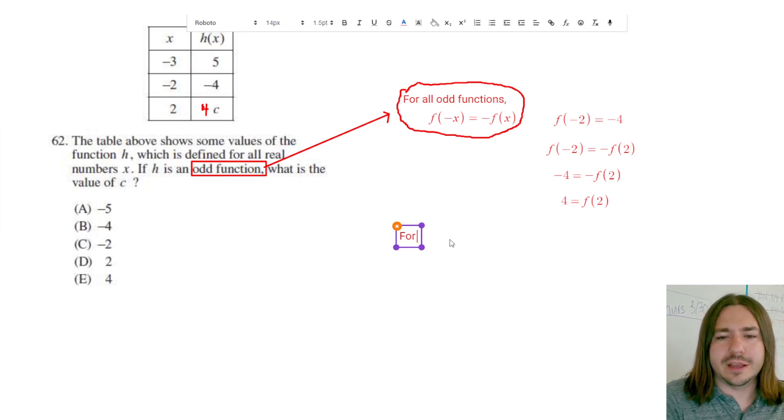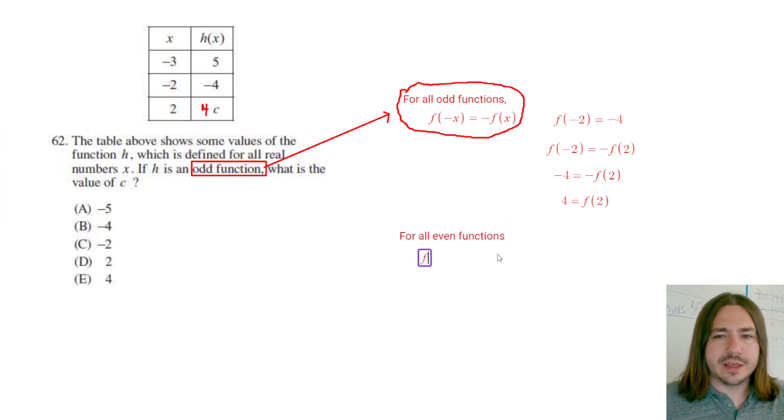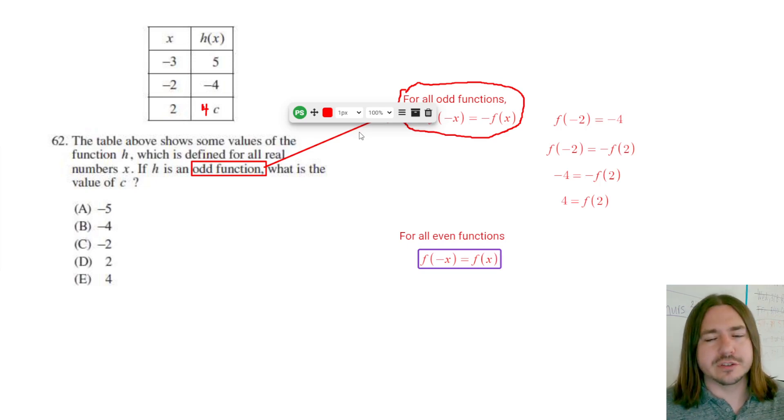For all even functions, f(-x) = f(x). If this question said h was an even function, then the value at x = 2 would have to be the same as at x = -2, so the answer would be -4. For odd functions, the value is the opposite; for even functions, they're the same when you negate x.